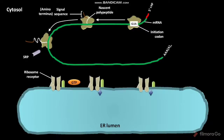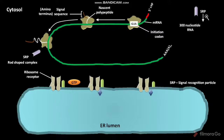In the cytosol of the cell, SRP complexes are found. SRP stands for signal recognition particle. SRP is a rod-shaped complex containing 300 nucleotide RNA and 6 different proteins. The 300 nucleotide RNA is called 7-SL RNA. The combined relative molecular mass of these 6 proteins is 325,000.